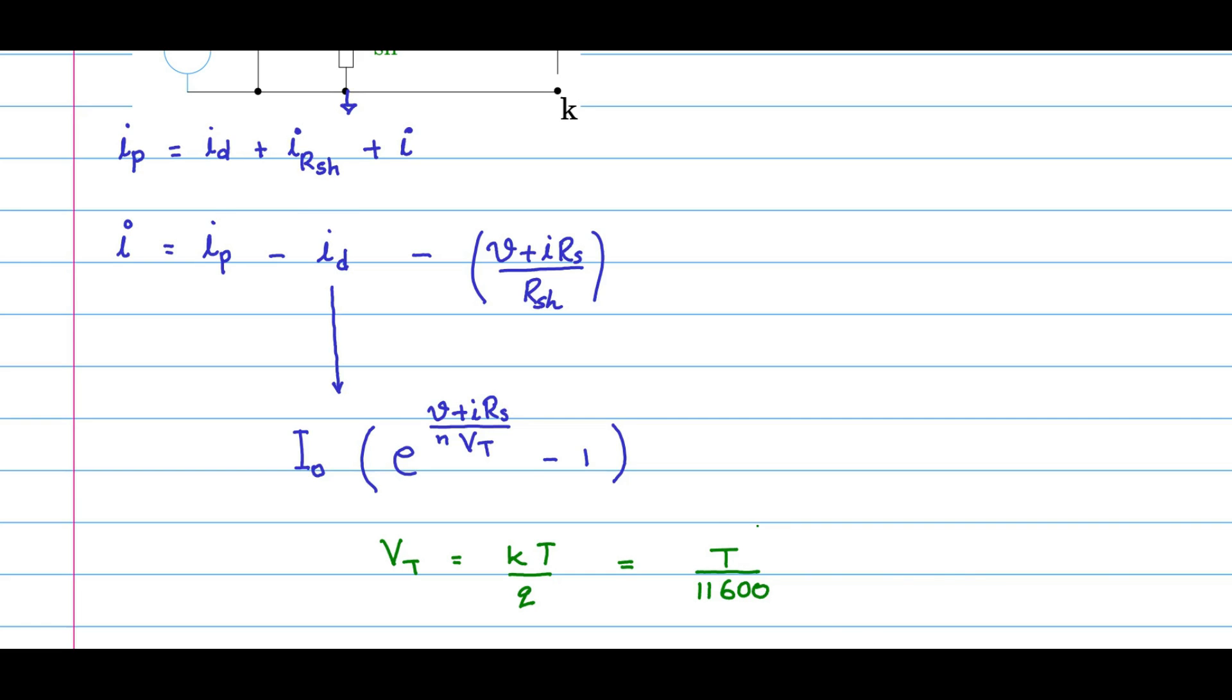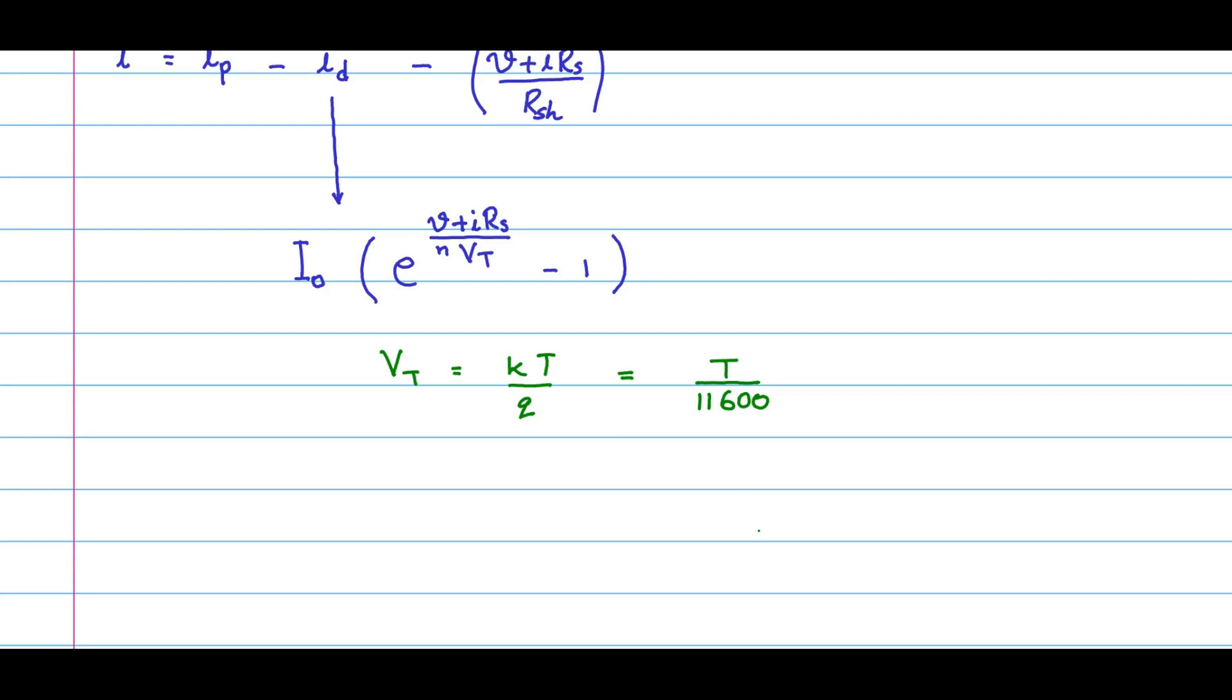n is a parameter which is dependent upon the material and it has a value equal to two for silicon, and it has values which are different for other semiconductor materials.